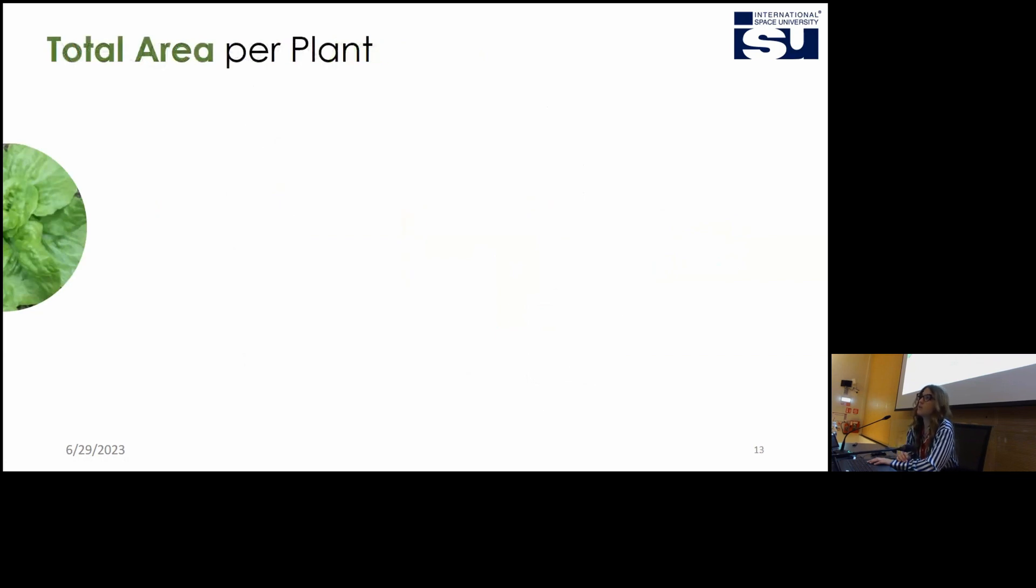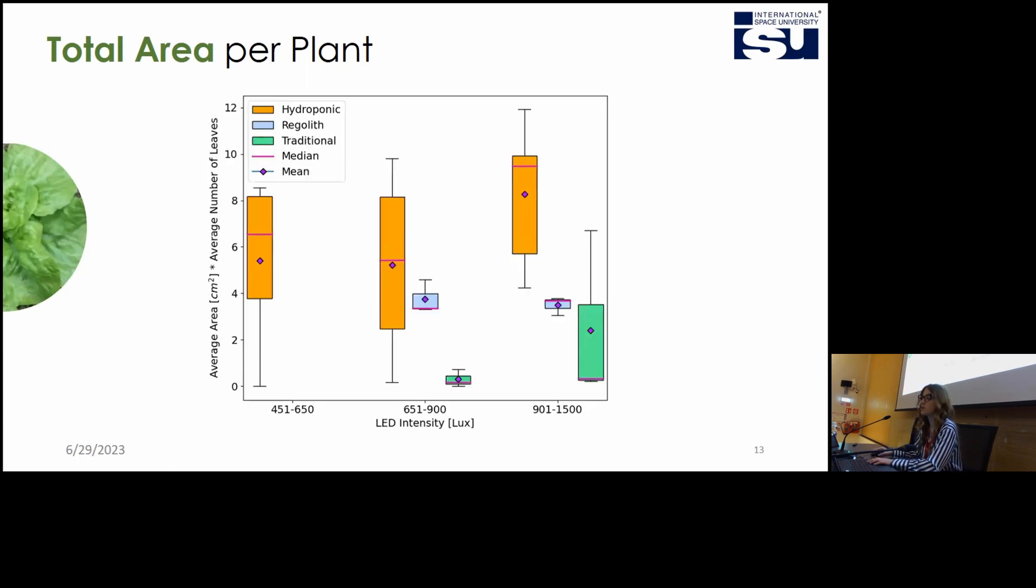But at the end of the day, we don't want to know just the average area or the number of leaves, but the total amount of leaves that we can eat for future explorations. So I multiplied the average area by the average number of leaves to have the total area of leaves per plant. And here we can clearly see that the hydroponic system is way better performing than the regolith one.